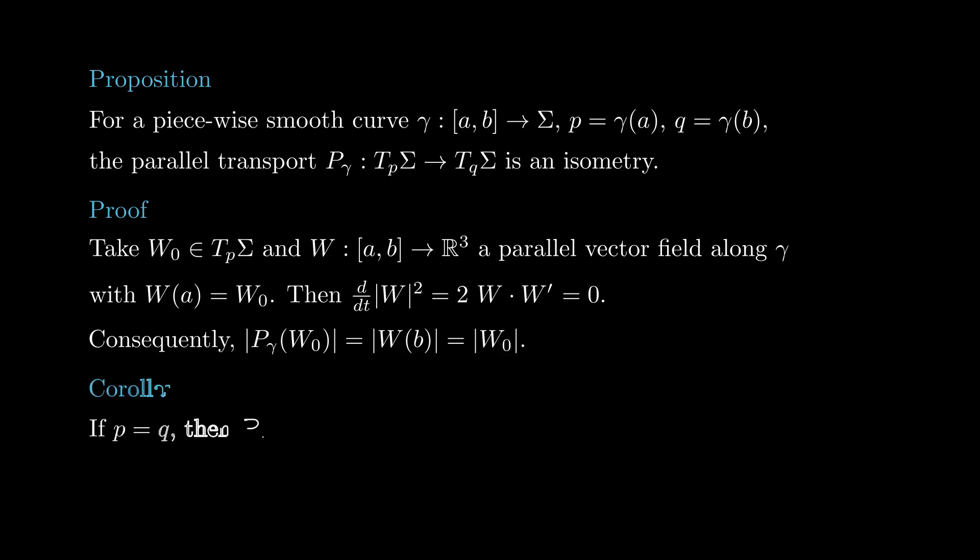In particular, if gamma is a closed curve, the parallel transport along gamma is a rotation of the plane tangent to sigma at the base point of gamma. We now deal with the problem of computing the angle of such rotation.